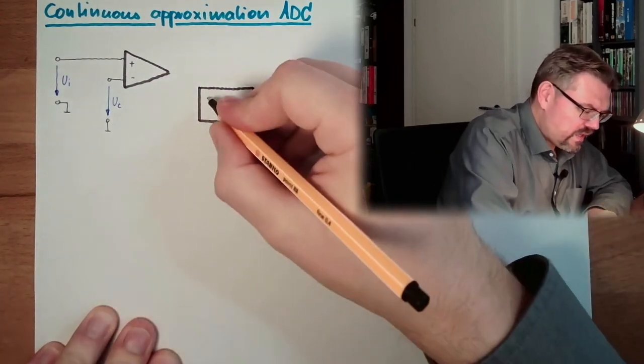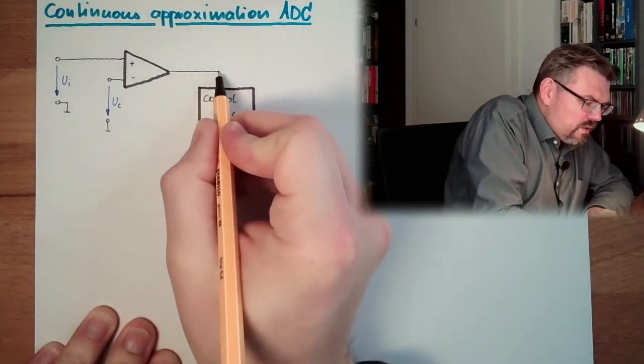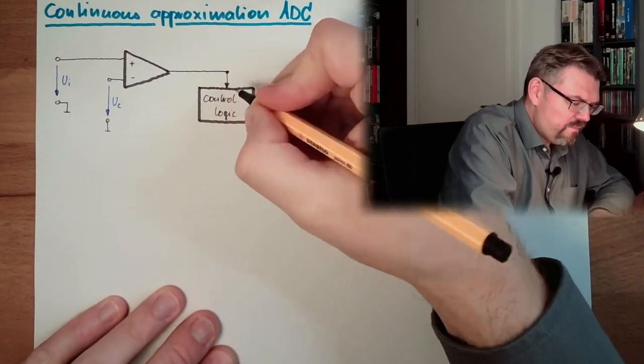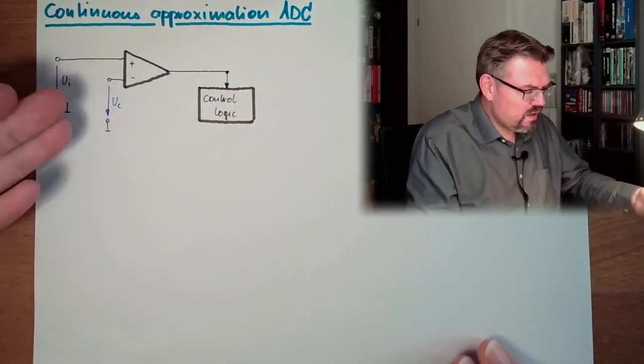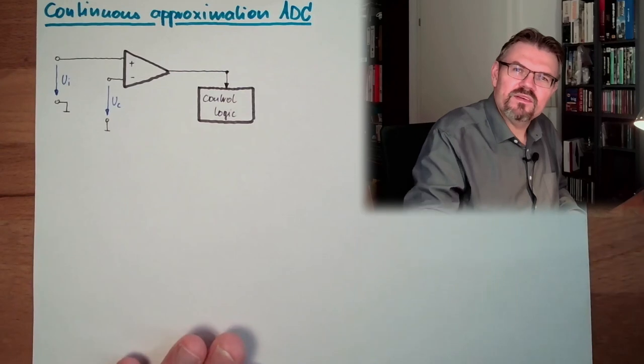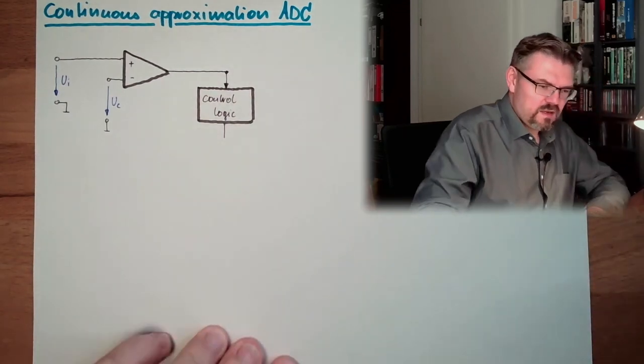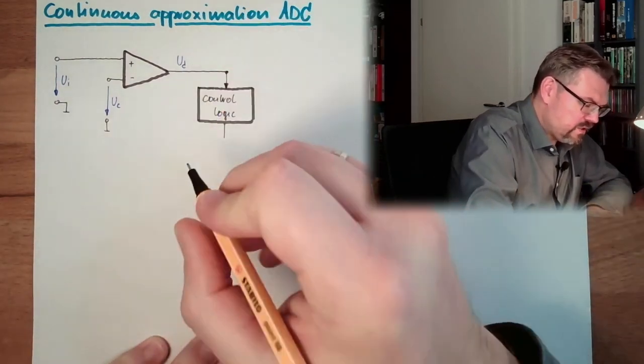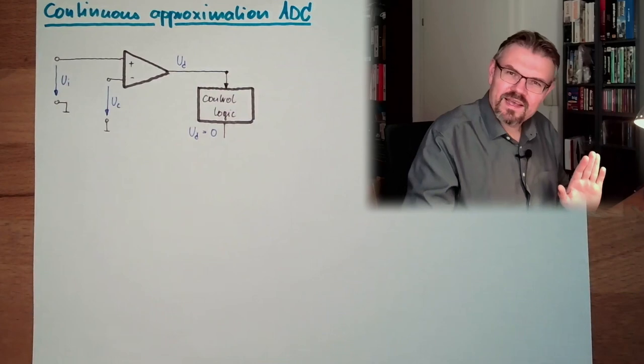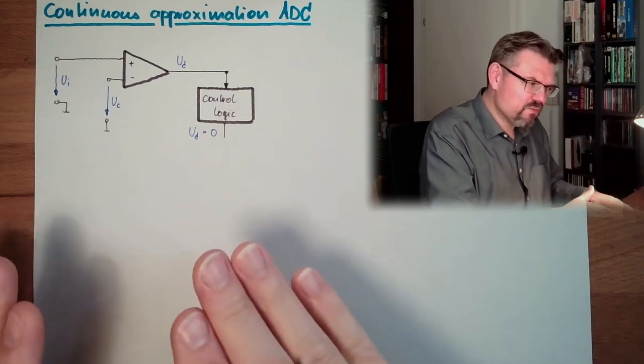What this control logic does - this is what the control logic basically is: it's telling if we have a Ud delta voltage, this means Ud equals zero. It's not exactly zero, of course there's a little tolerance area, but it's little and we say okay, Ud is zero. This is the output of the control logic.